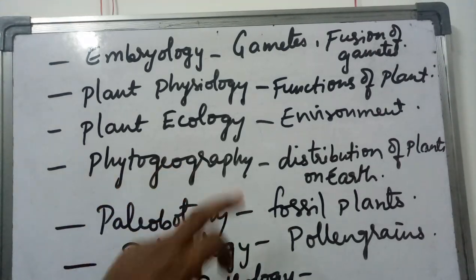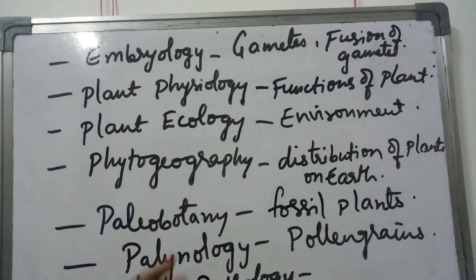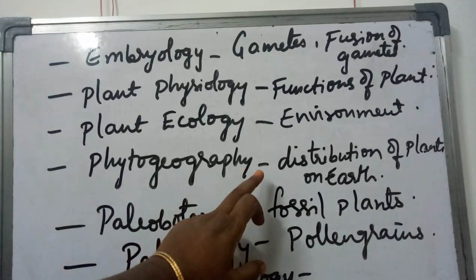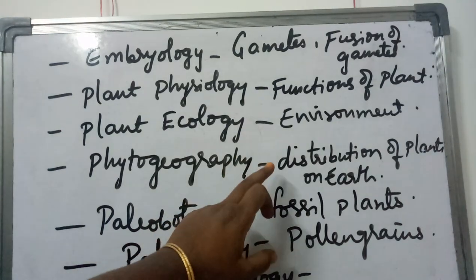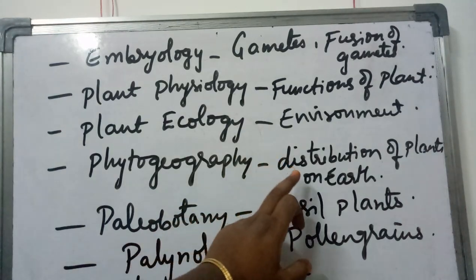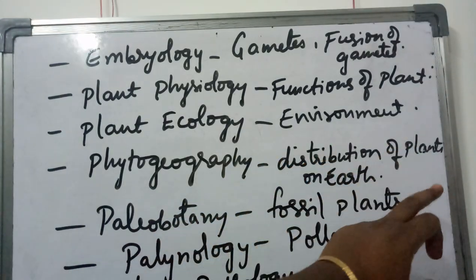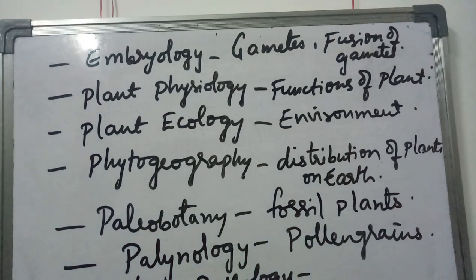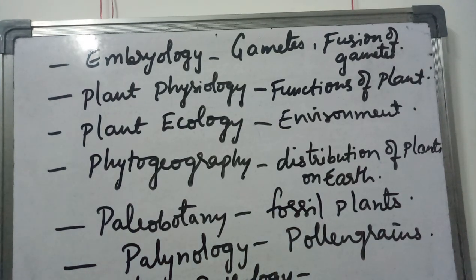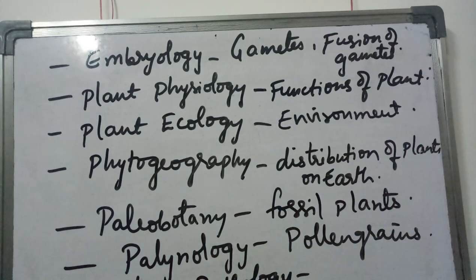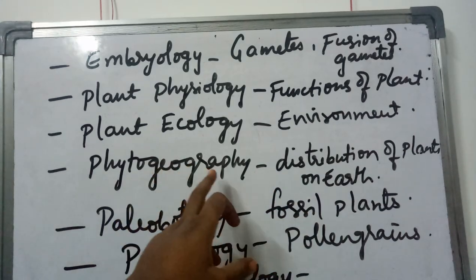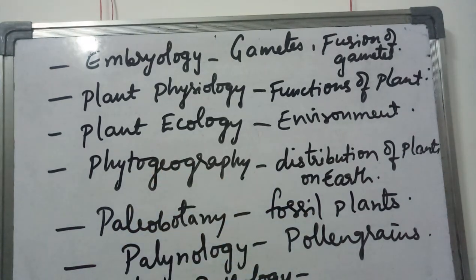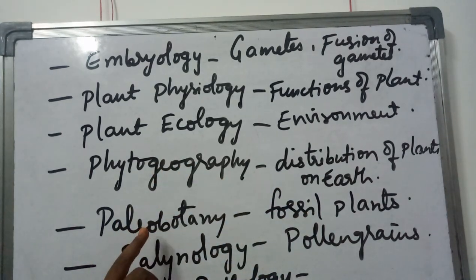Coming to phytogeography — it is a branch of botany that deals with the distribution of different plants on the earth's surface. How the plants are distributed on the surface of the earth comes under phytogeography.